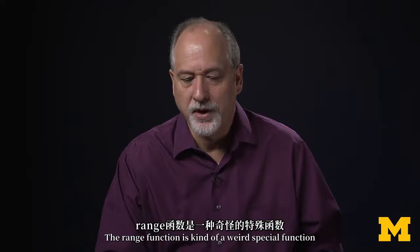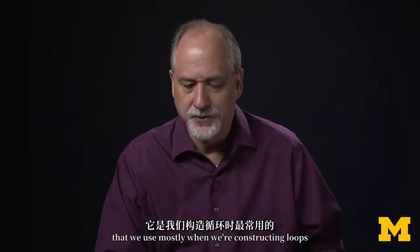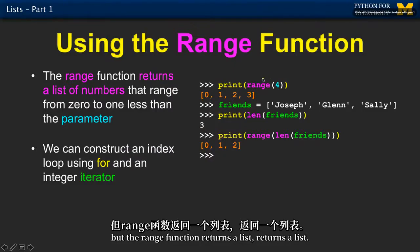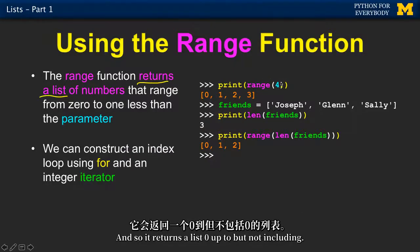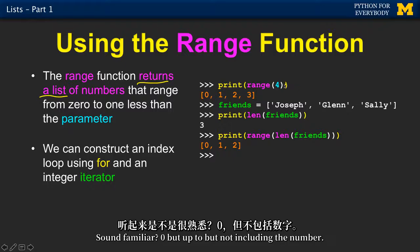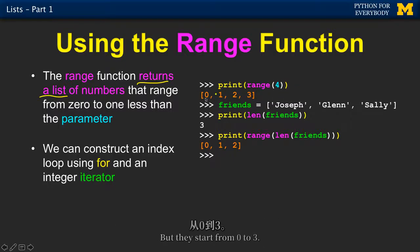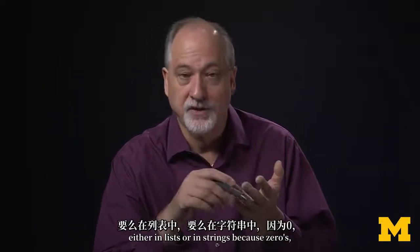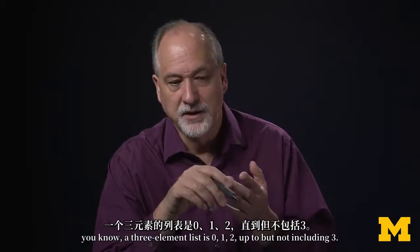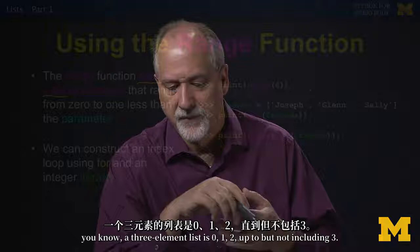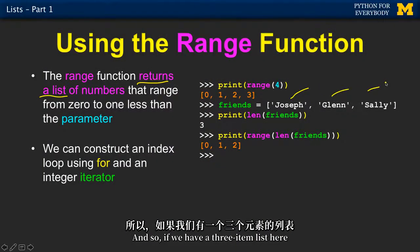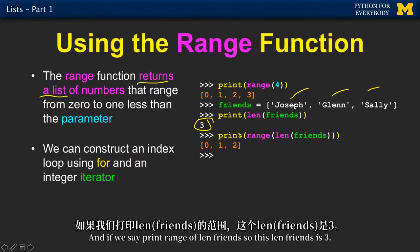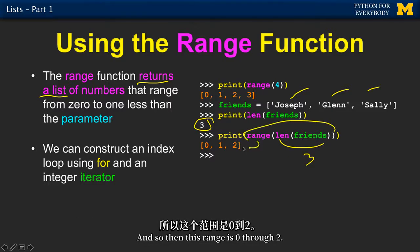The range function is a special function we use mostly when constructing loops, and it returns a list — zero up to but not including the number. Range of four gives us four numbers starting from zero to three. The reason for this is that they correspond to the index positions in lists or strings, since a three-element list is zero, one, two — up to but not including three. If we say 'range of len(friends),' and len(friends) is three, then range gives us zero through two.